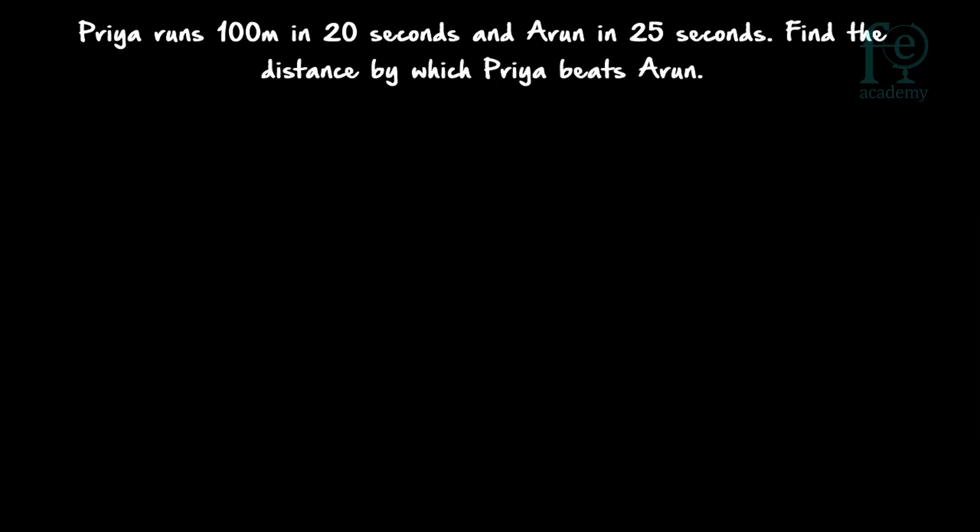Hi friends, welcome to today's class. Today's question is: Priya runs 100 meters in 20 seconds and Arun in 25 seconds. Find the distance by which Priya beats Arun.